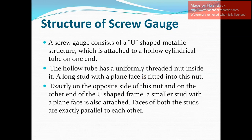Now we are going to discuss the structure of a screw gauge. A screw gauge consists of a U-shaped metallic structure which is attached to a hollow cylindrical tube on one end. The hollow tube has a uniformly threaded nut inside it, and a long stud with a plain face is fitted into this nut.